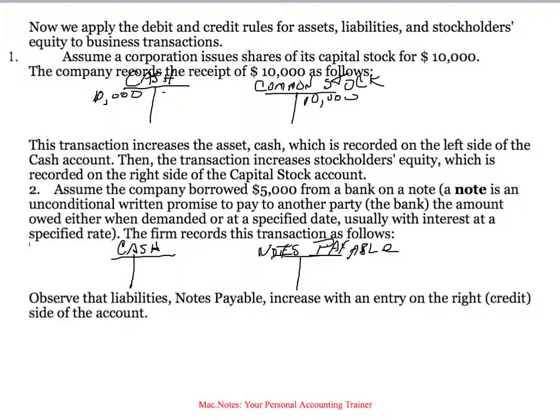Now assume a company borrowed $5,000 from the bank on a note, the amount owed either when demanded or by a specific date. The firm records the transaction as follows: we now have $5,000 more in cash, so our cash account goes up by $5,000 — we debit cash $5,000. Our liability account also goes up because now we owe the bank a notes payable, and so we record the increase on our liability account on the right-hand side.